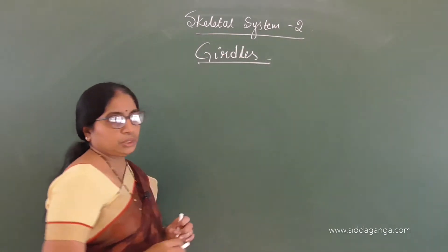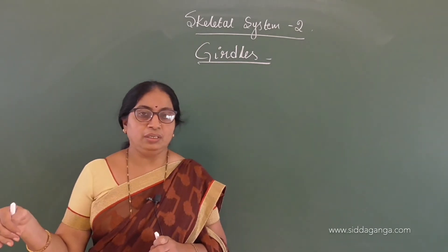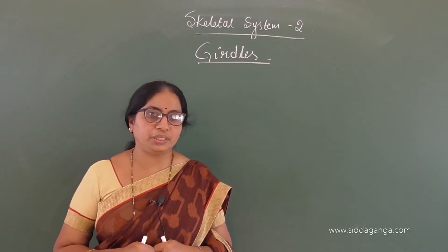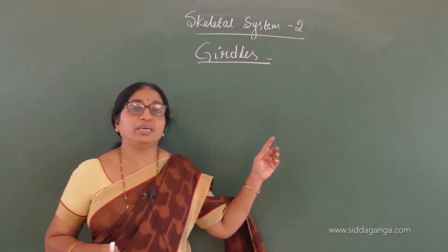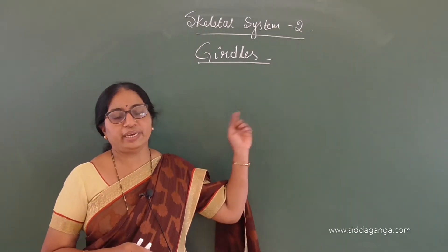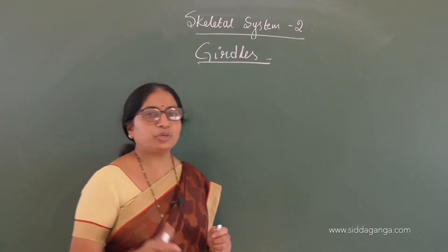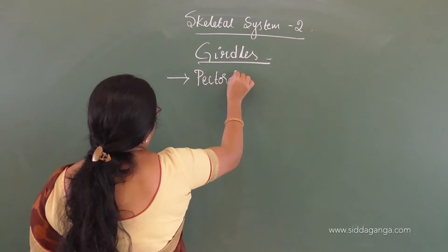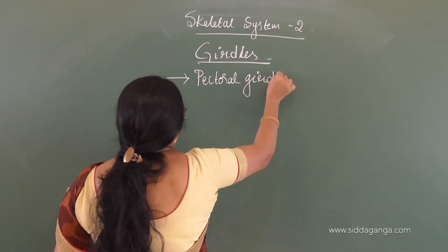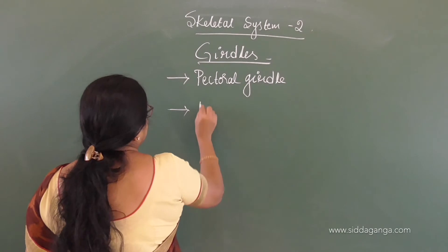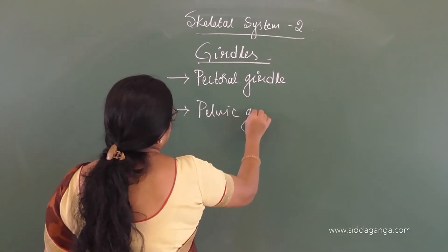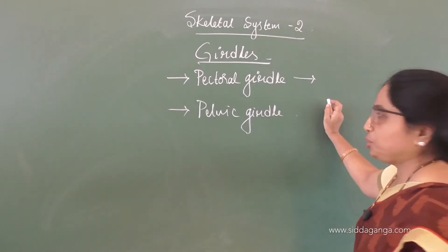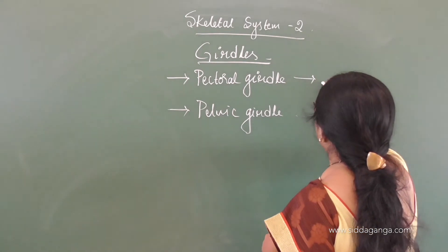Girdles are the structures which join the parts of the appendicular skeleton with the axial skeleton. The lower limbs and upper limbs are joined to the axial skeleton with the help of these girdles. There are two important girdles in the human body: one is called the pectoral girdle and the other is the pelvic girdle.